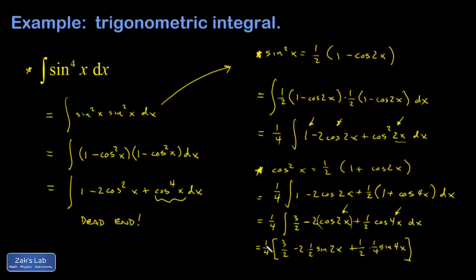And I could clean it up a little bit. I'm not going to invest too much in that. I end up with a 3 eighths x minus sine 2x plus 1 eighths sine 4x plus c.